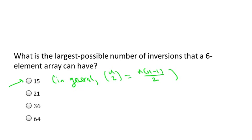The reason is the worst case is when the array is in backwards order, reverse sorted order, and then every single pair of array indices is inverted. And so the number of indices i, j with i less than j is precisely n choose two.